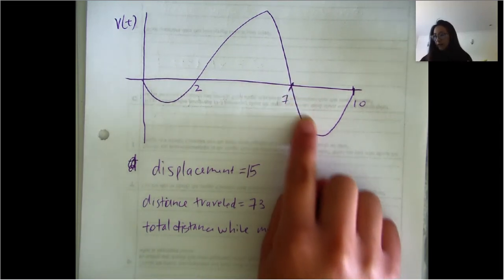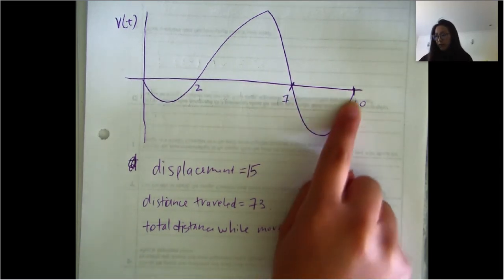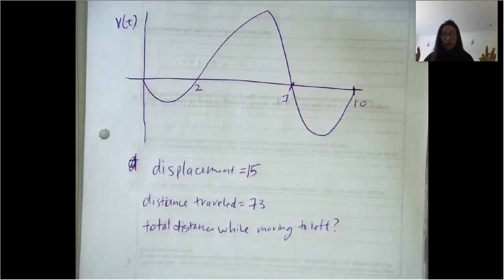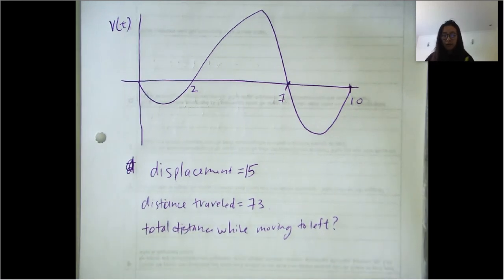It turns around again and then it goes left. That's the general idea of our velocity graph.